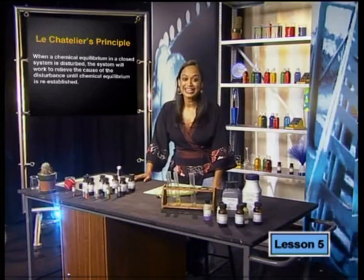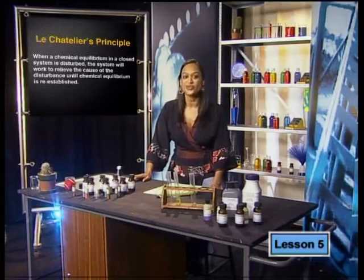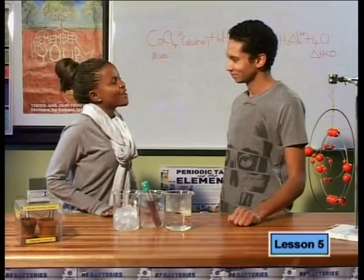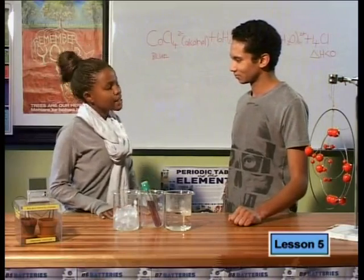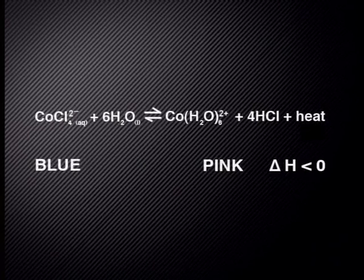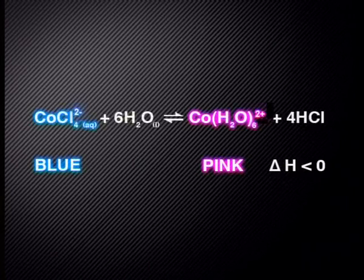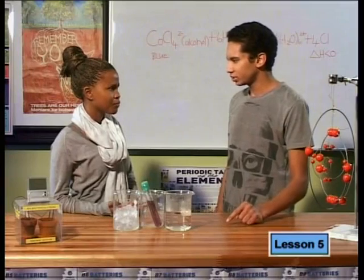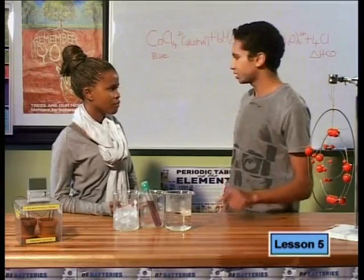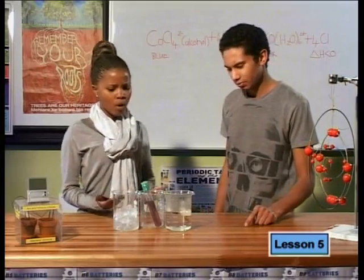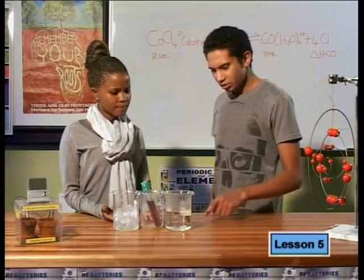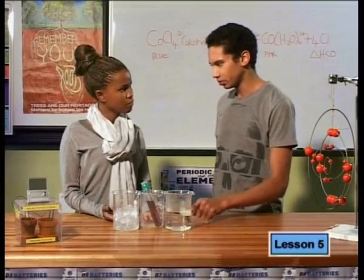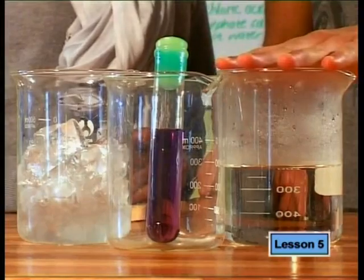Let's now join Kanye and Rahim as they observe changes to the equilibrium of a cobalt chloride reaction. We're going to use the cobalt chloride experiment again to see the effect of a change in temperature. The equation has reached equilibrium at room temperature, and the change in heat is less than zero, meaning more heat was given off than taken in, so the forward reaction was exothermic. We're going to use the beakers to change the temperature — this one has hot water in it and this one has ice water in it.